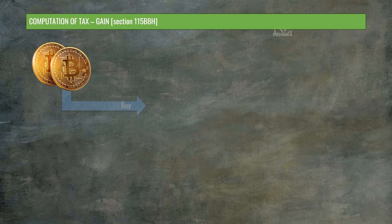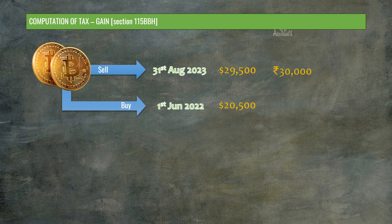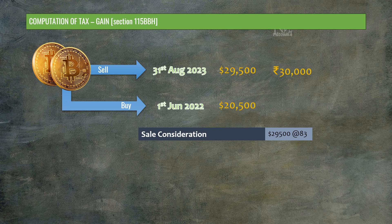To have a better understanding, let's consider a scenario. Let's say you bought a Bitcoin on 1st June 2022 for $20,500. After a little over a year, that is on 31st August 2023, let's say you sold this Bitcoin for $29,500, and in the sale transaction you incurred an expense of Rs. 30,000. The sale consideration is $29,500 multiplied by the exchange rate — say 83 rupees per dollar — which equals Rs. 24,48,500.